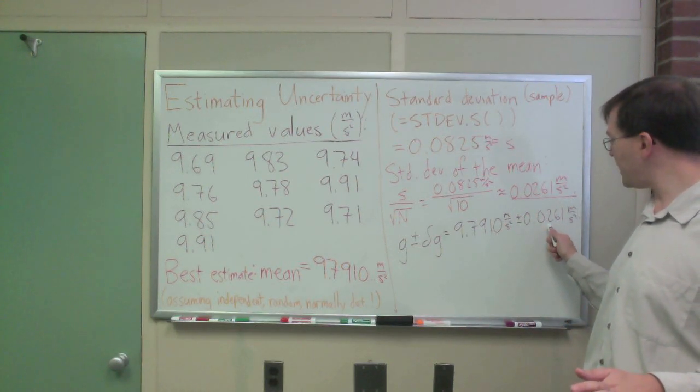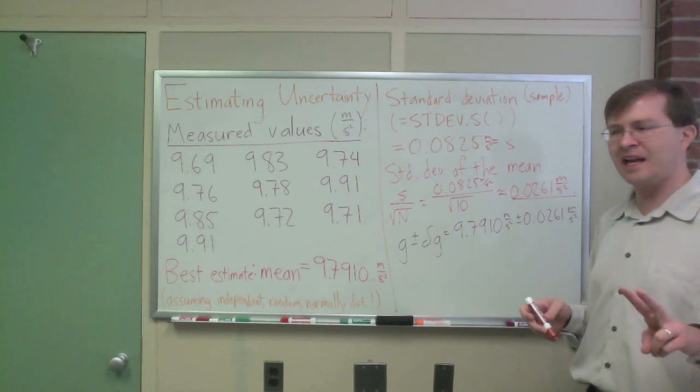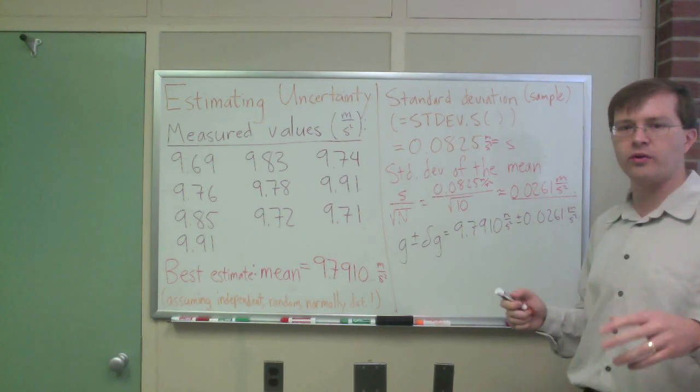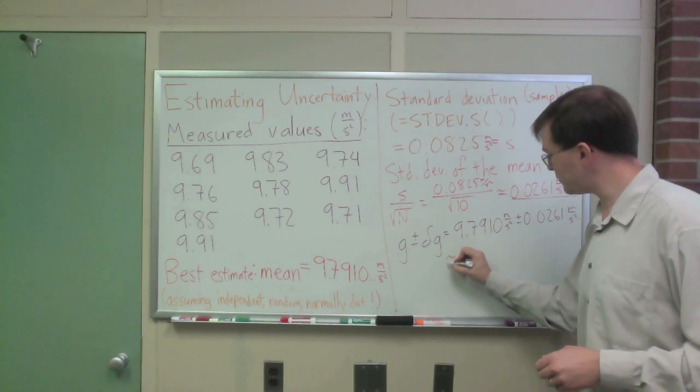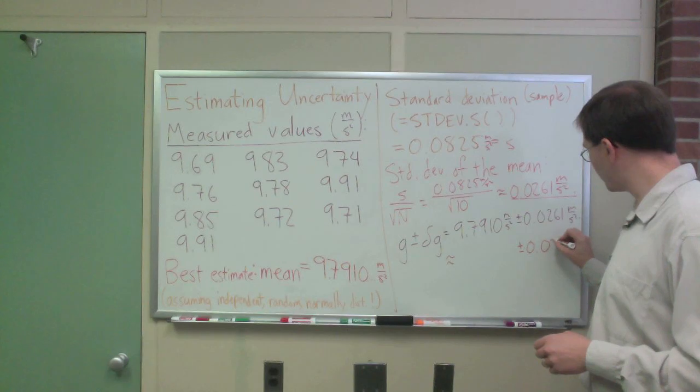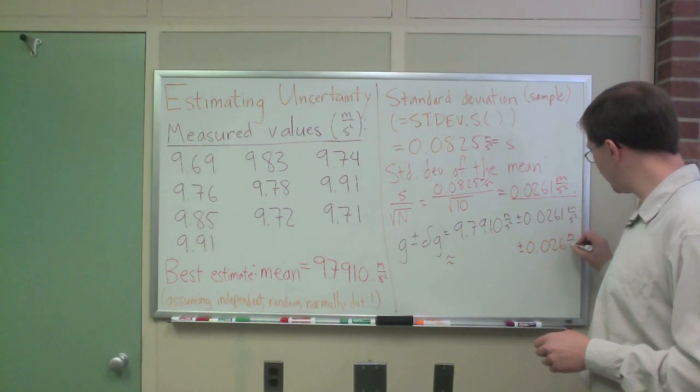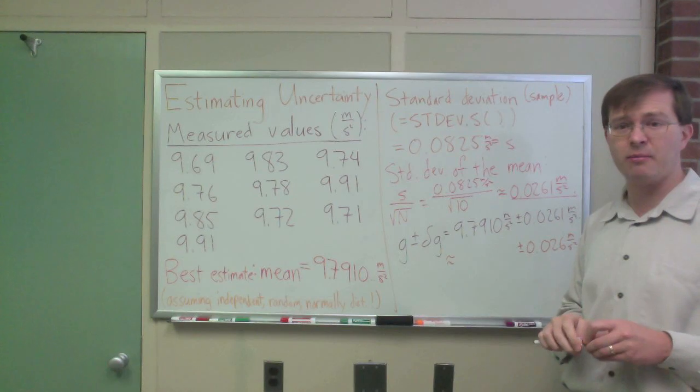If instead, but for me, I like to keep two significant digits in my uncertainty any time that the first digit is a one or a two or maybe a three. So I'm going to write this as plus or minus 0.026 meters per second squared. But again, if you wrote 0.03 meters per second squared, that's fine by me too.